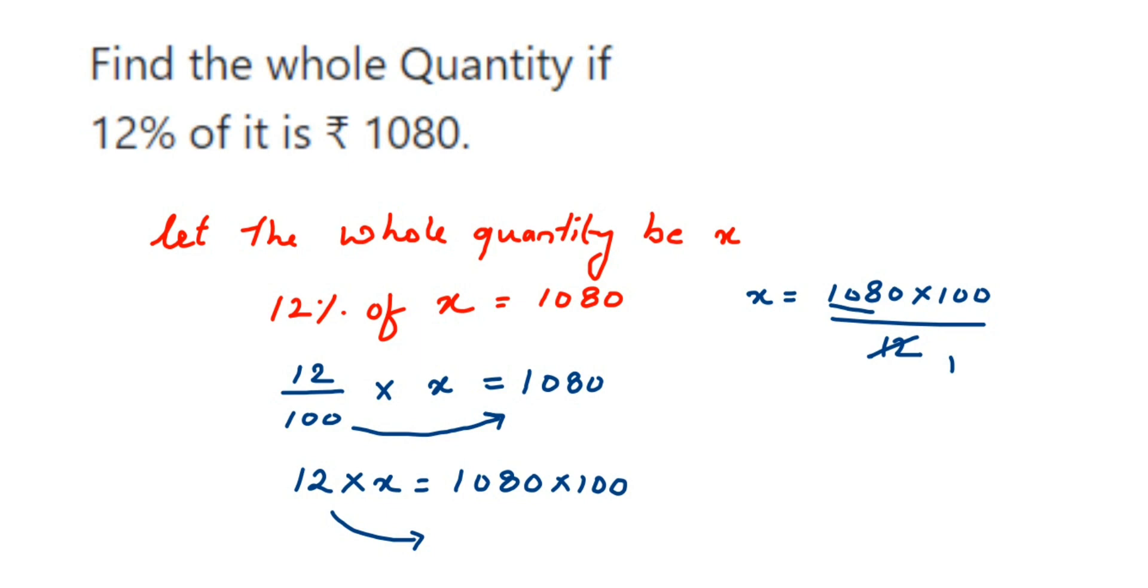So 12 ones, 12 nines are 108, and I have this one zero. I'm going to put the zero here.